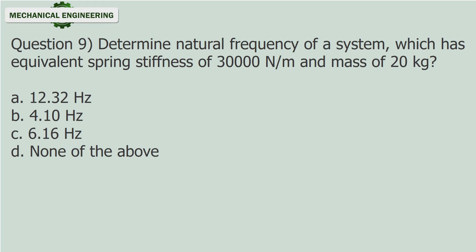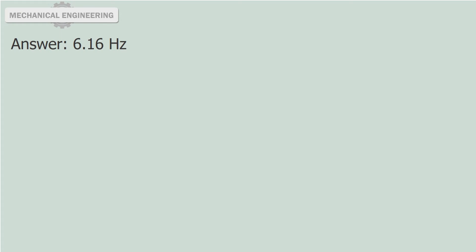Question 9: Determine natural frequency of a system which has equivalent spring stiffness of 30,000 N/m and mass of 20 kg. a. 12.32 Hz. b. 4.10 Hz. c. 6.16 Hz. d. None of the above. Answer: 6.16 Hz.